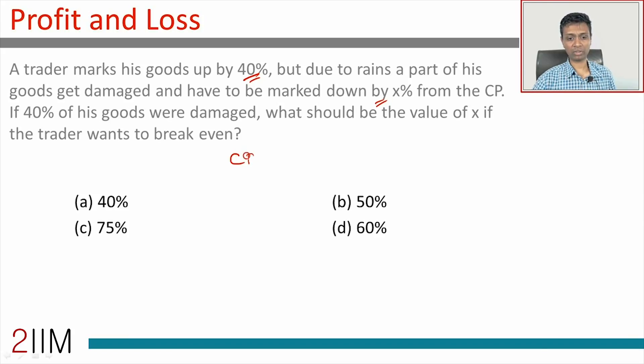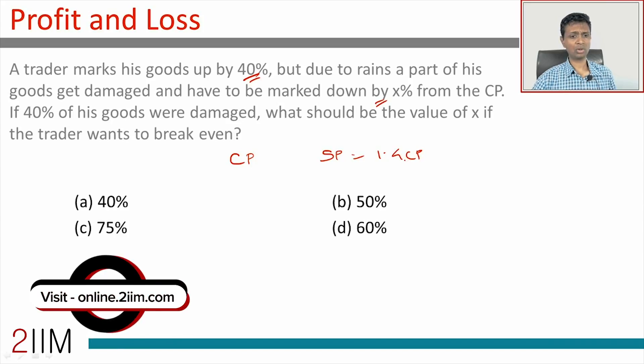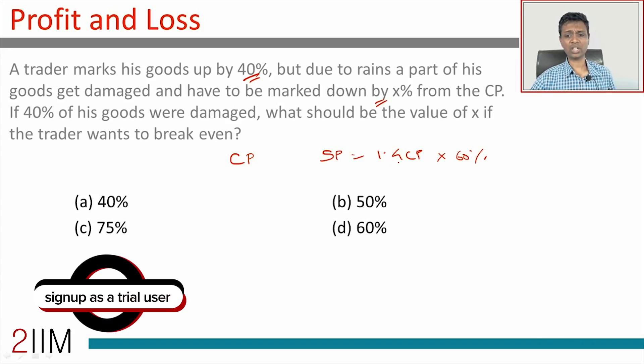Assume his cost price is CP. He marks his goods up by 40%, so the selling price should be 1.4 CP. 40% of his goods were damaged, so at 1.4 times CP he sells only 60%. So he generates 1.4 into 60%, or 0.84 CP as revenue.